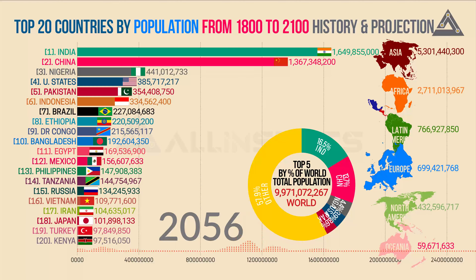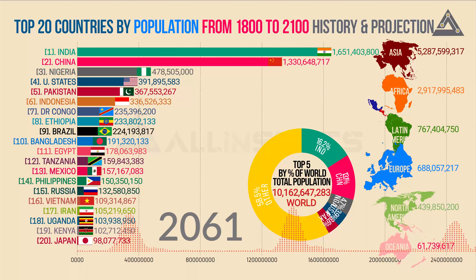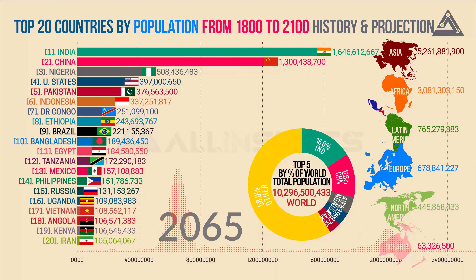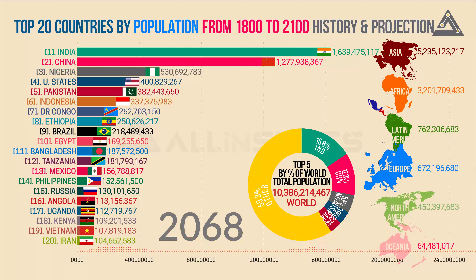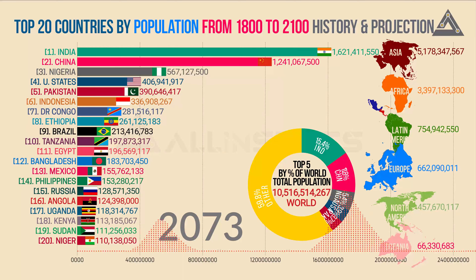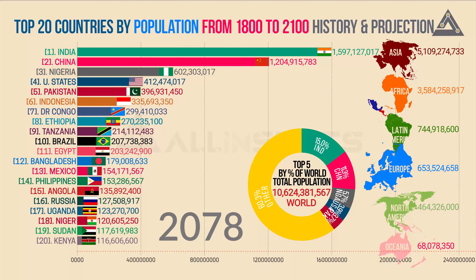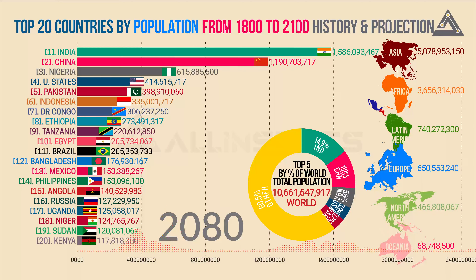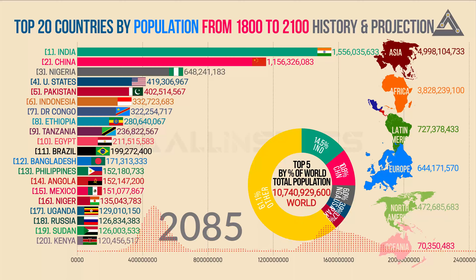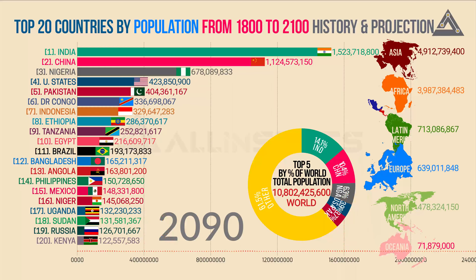The global population growth rate has declined from a peak of 2.1 percent per year in 1968 to less than 1.1 percent today. We are in transition to a new balance where rapid population change will come to an end. This big global demographic shift of more than two centuries is coming to an end. In the new equilibrium, it will be low fertility — not high mortality — that keeps population changes small. Ultimately, for the first time in modern history, the world's population is expected to virtually stop growing by the end of this century.